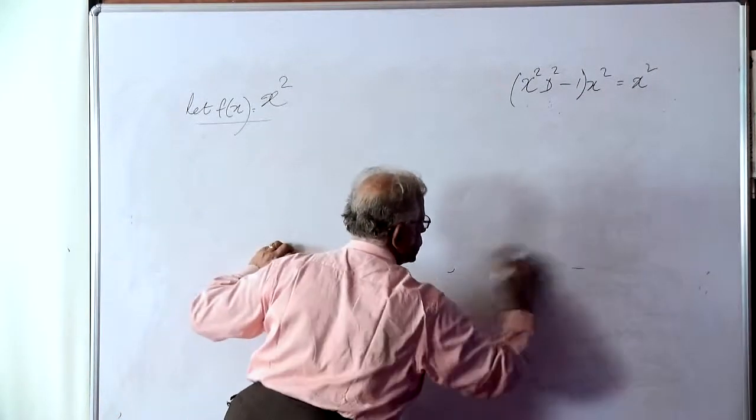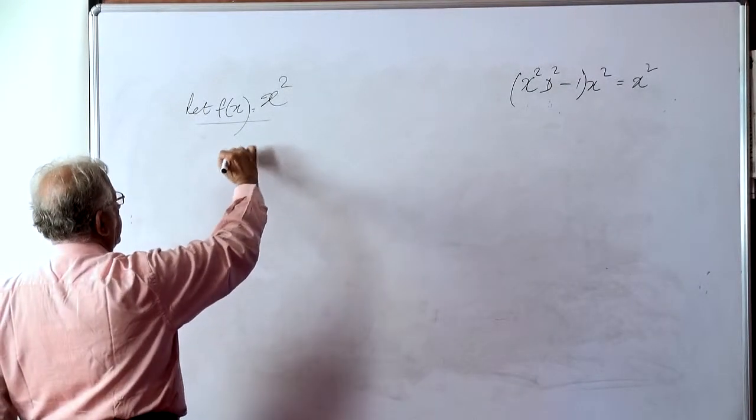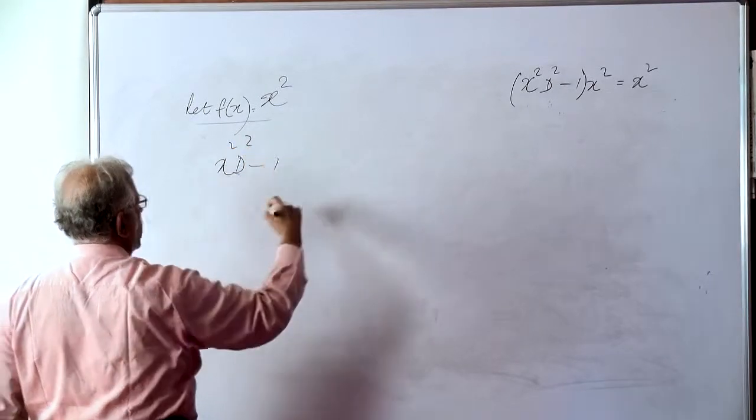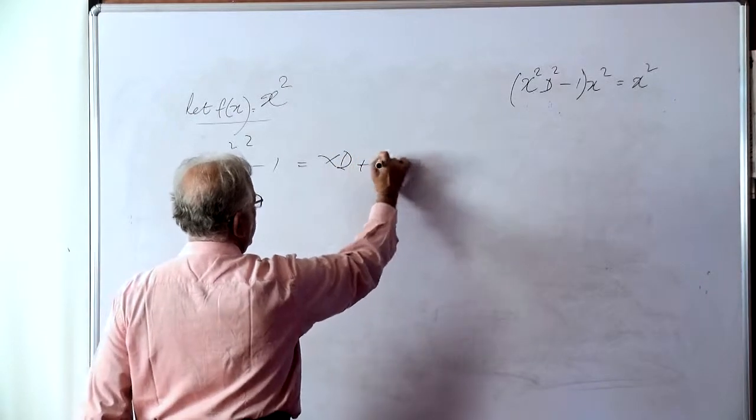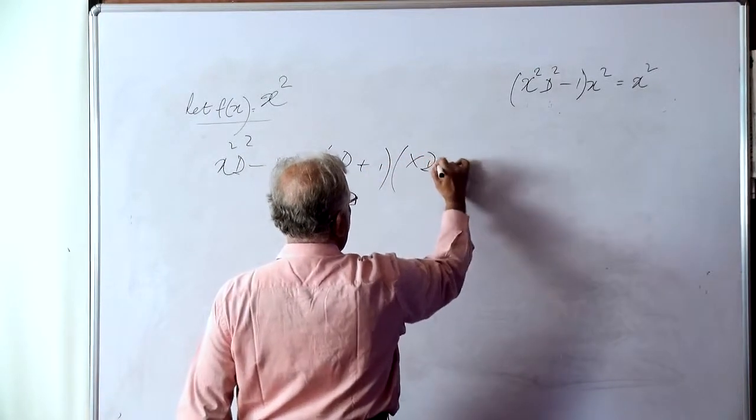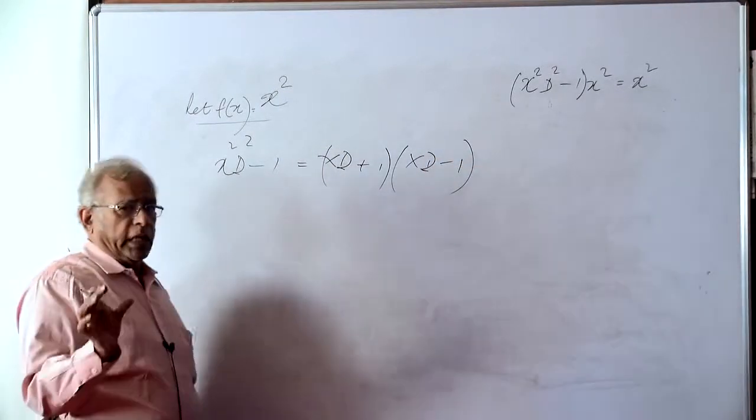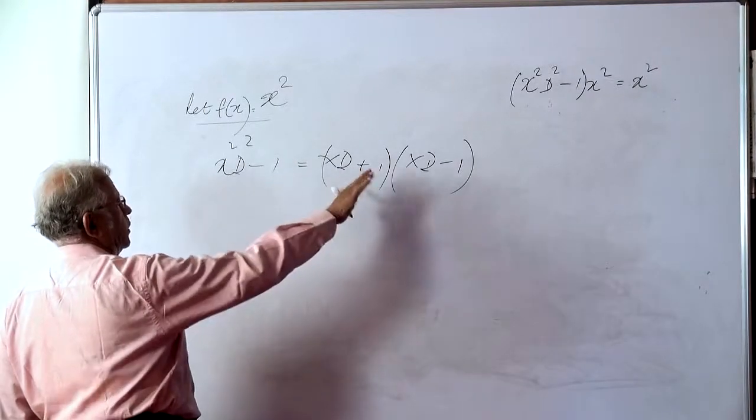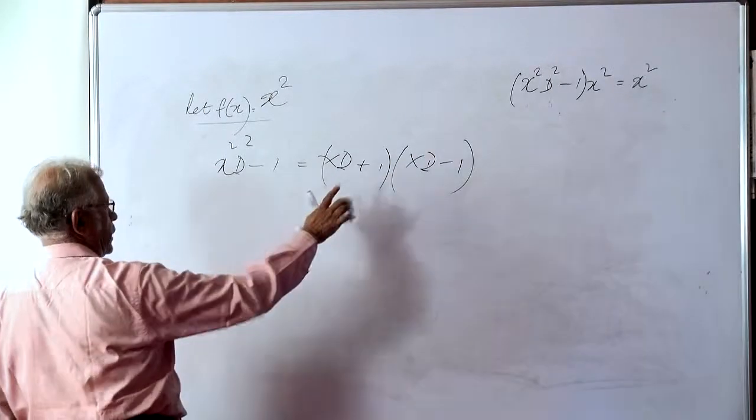Keeping the same function, let us see whether we can write x squared d² minus 1 as (xd plus 1) into (xd minus 1). So we are treating xd as an algebraic quantity. We will assume that this is possible, but let us see the effect. What happens when we do this?